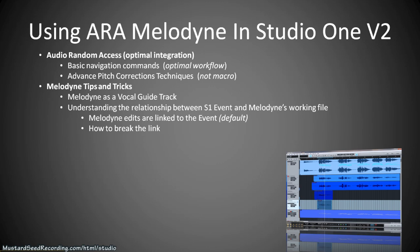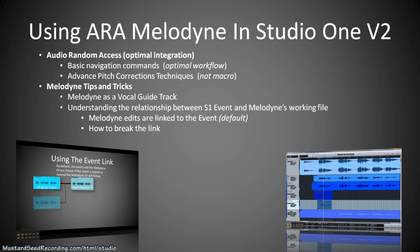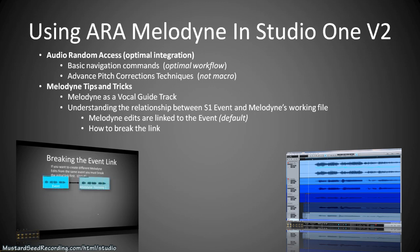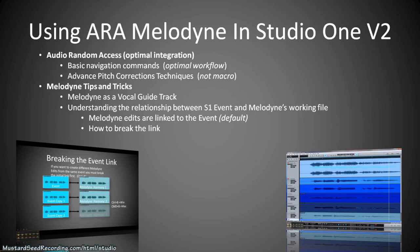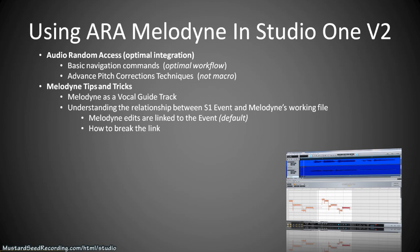We'll talk about understanding the relationship between Studio One events and Melodyne's working or transfer files. By default, the Melodyne edits are linked to the event, so if you copy the event the same edit goes with it. If you change a note in one event and copy it ten times, you'll have the same changed note each time. We'll talk about how to break that link so you can create multiple harmonies off of a single Studio One event.